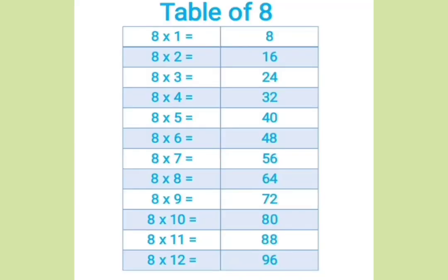Eight ones are eight, eight twos are sixteen, eight threes are twenty-four, eight fours are thirty-two, eight fives are forty, eight sixes are forty-eight, eight sevens are fifty-six, eight eights are sixty-four, eight nines are seventy-two, eight tens are eighty, eight elevens are eighty-eight, eight twelves are ninety-six.